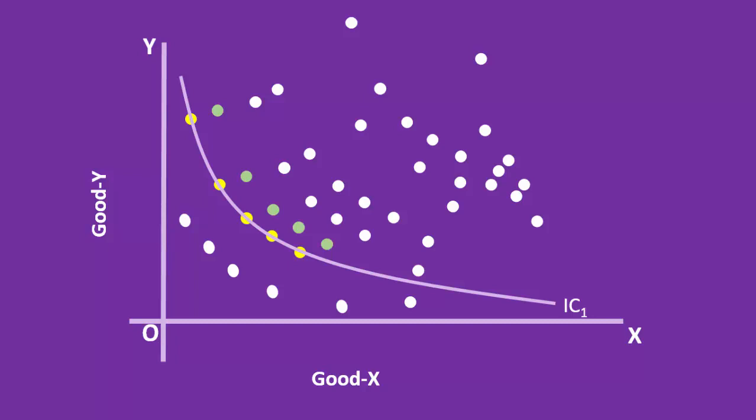Again, the consumer is able to identify another set of combinations. They are shown by green colored dots. Let us draw a smooth curve joining all these points. This is another indifference curve. We shall name it as IC2. It represents a higher level of satisfaction than IC1.